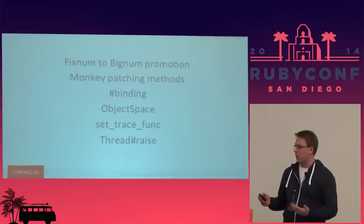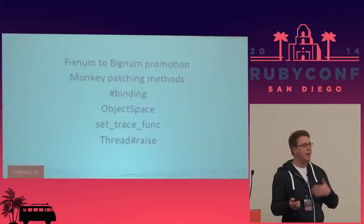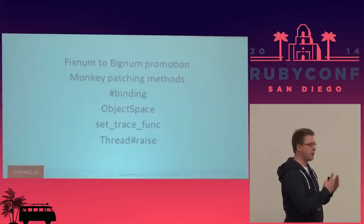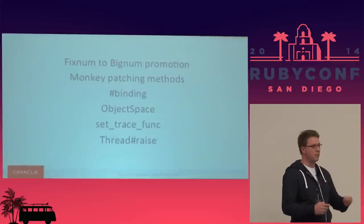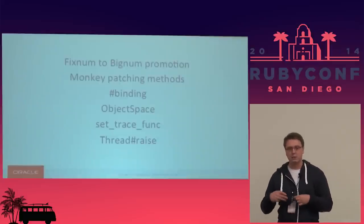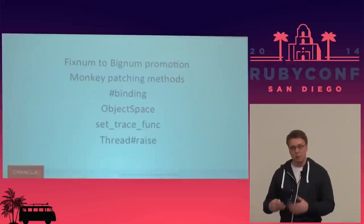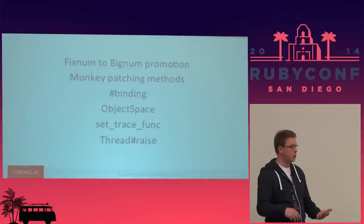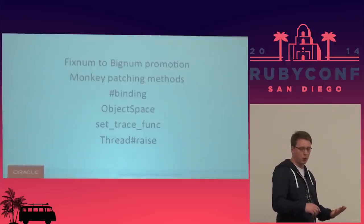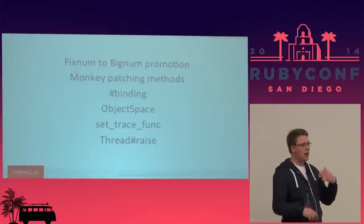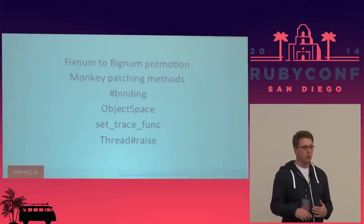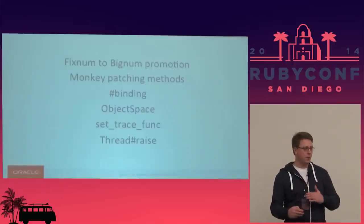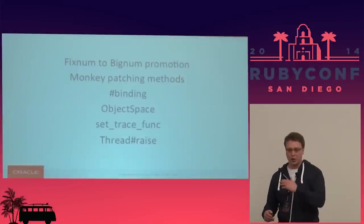Object space is tricky because it allows you to get any live object at any time, meaning you can't easily remove objects — you always have to be able to list them. In JRuby, object space is disabled by default because of the cost. Set trace func is similarly disabled or unsupported in some implementations. It allows you to install a function called on every line and every method call, meaning you need a check every time — again, these checks become more work than you're actually doing.